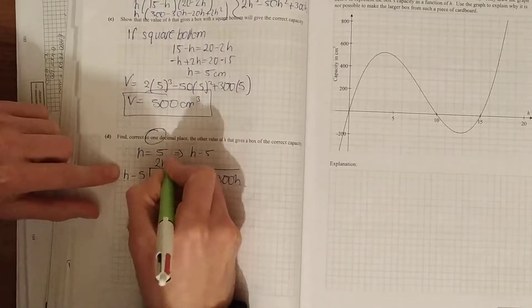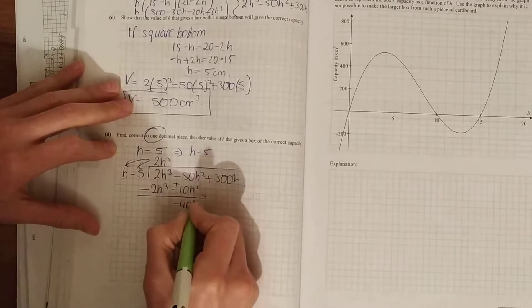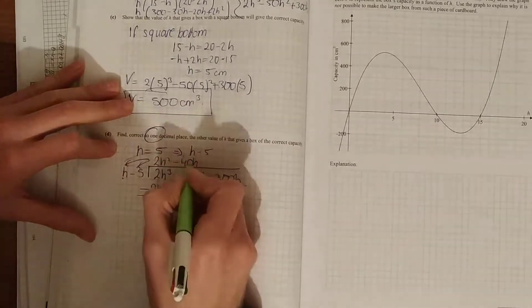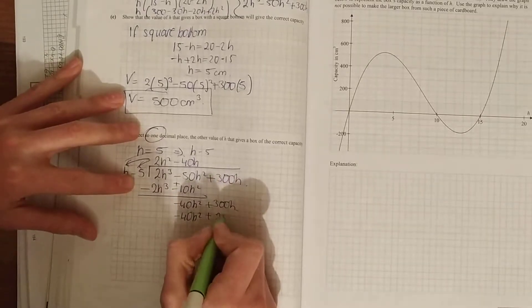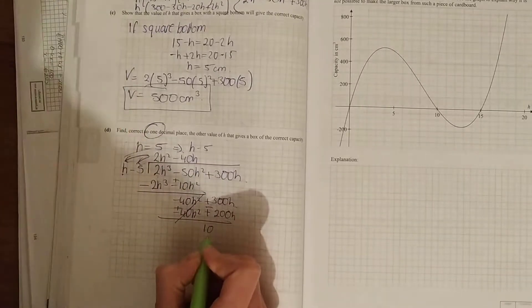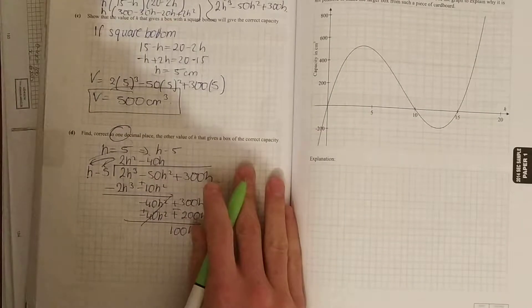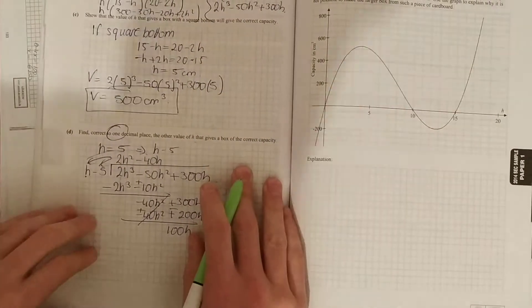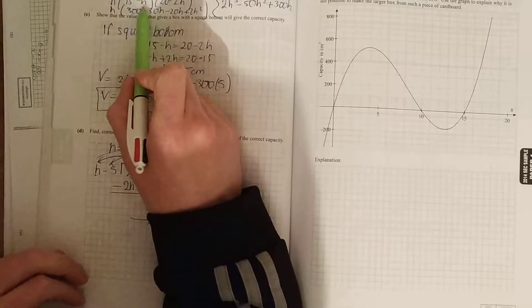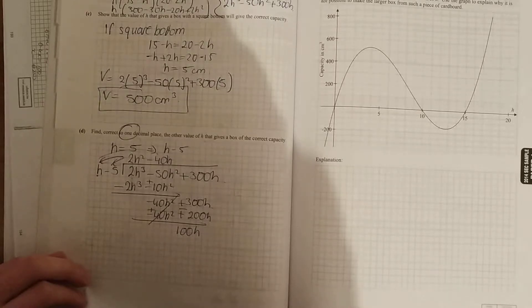So what do you want to multiply h by? Draw the line, change the signs. What do you want to multiply h by? You get minus 40h squared minus 40h. Multiply it down, draw the line, change the signs.